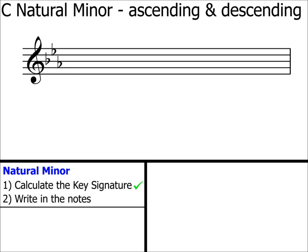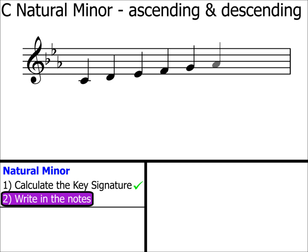Step 2. Write in the notes. We start on C, as this is C minor. And ensuring that we put a note in every space and on every line, we draw the notes up to the next C. This is the ascending scale, but looking at the question, we've also been asked to write the descending version as well.